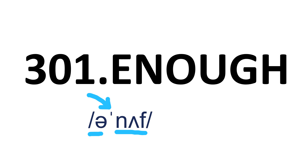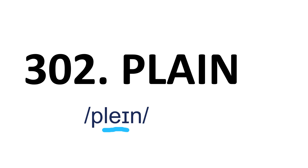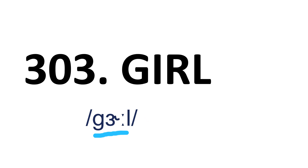Enough. It's a two-syllable word and stress is on the second syllable. I have shown the syllables by blue lines and the stress is shown by the blue arrow. I will follow the same pattern for all the words we learn today. Enough. Plain. Plain. Girl — it's a one-syllable word. Girl.